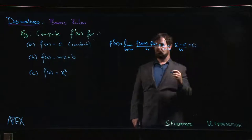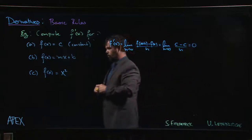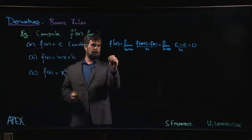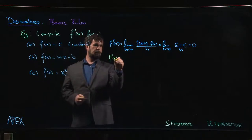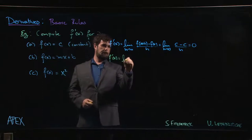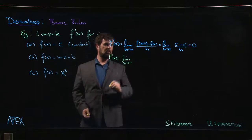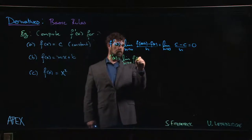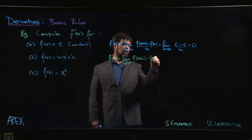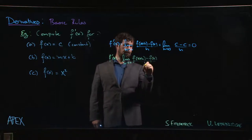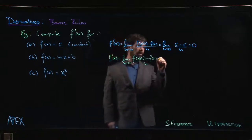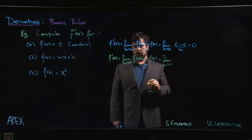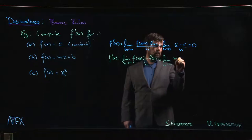Alright, for the next one, we have the limit as h goes to 0 of [f(x+h) - f(x)]/h. This time it looks like we're going to get a little bit more work: m times (x + h) plus b, subtract (mx + b), all over h.